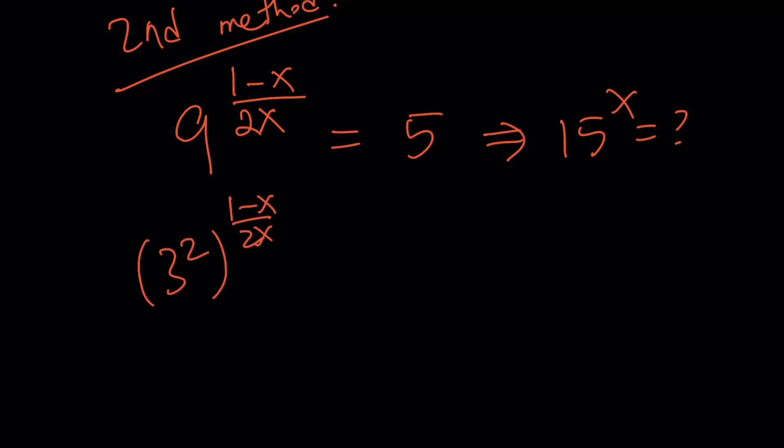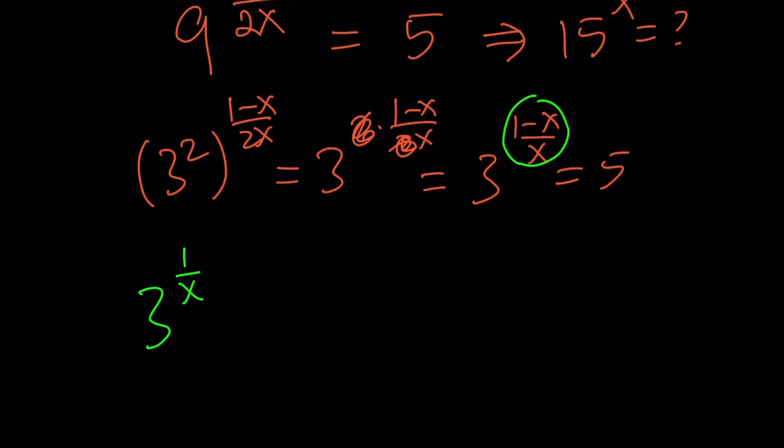I'm going to write 9 as 3 squared, then multiply the exponents. Anytime you can multiply exponents, it's fun. The 2 is going to cancel out. That gives us 3 to the power 1 minus x over x equals 5. Beautiful. Now I can separate the fraction into two pieces: 3 to the power 1 over x minus 1 equals 5, because that's what 1 minus x all over x means.